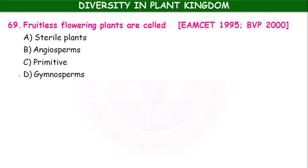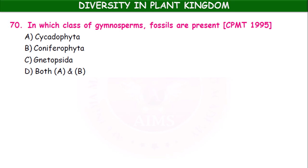Gymnosperms are the fruitless flowering plants. In which class of gymnosperms are fossils present? The options are Cycas, Cycadophyta, Coniferophyta, Nitopsida, and both A and B. In both Cycadophyta and Coniferophyta, fossils are included.